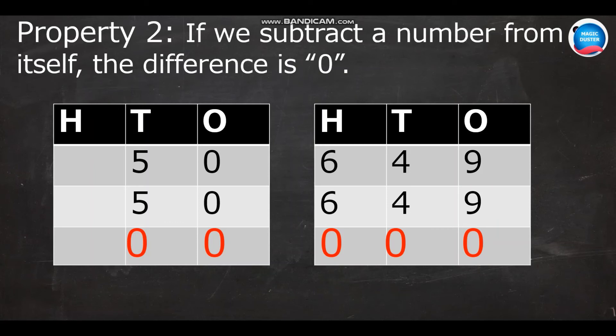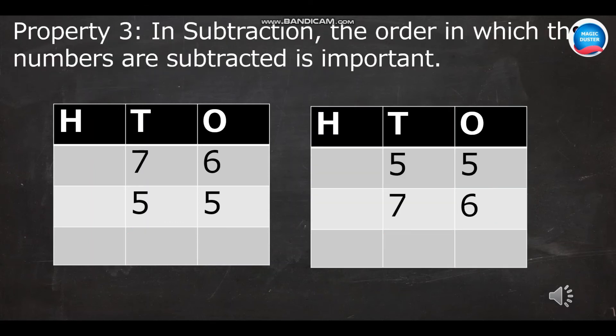And the third property: in subtraction, the order in which the numbers are subtracted is important. Let us see. Seventy-six minus fifty-five. Can I do the sum? Yes, we can. Because we should start with the ones column and all the numbers written in the above row are larger. So, six minus five is one. Seven minus five is two. So, the answer must be twenty-one.